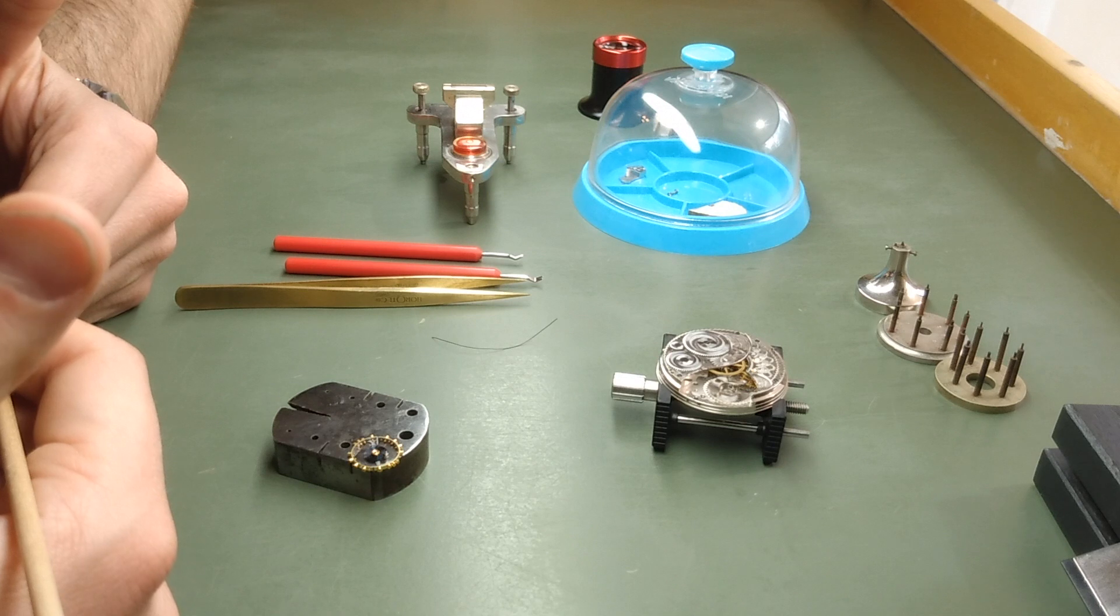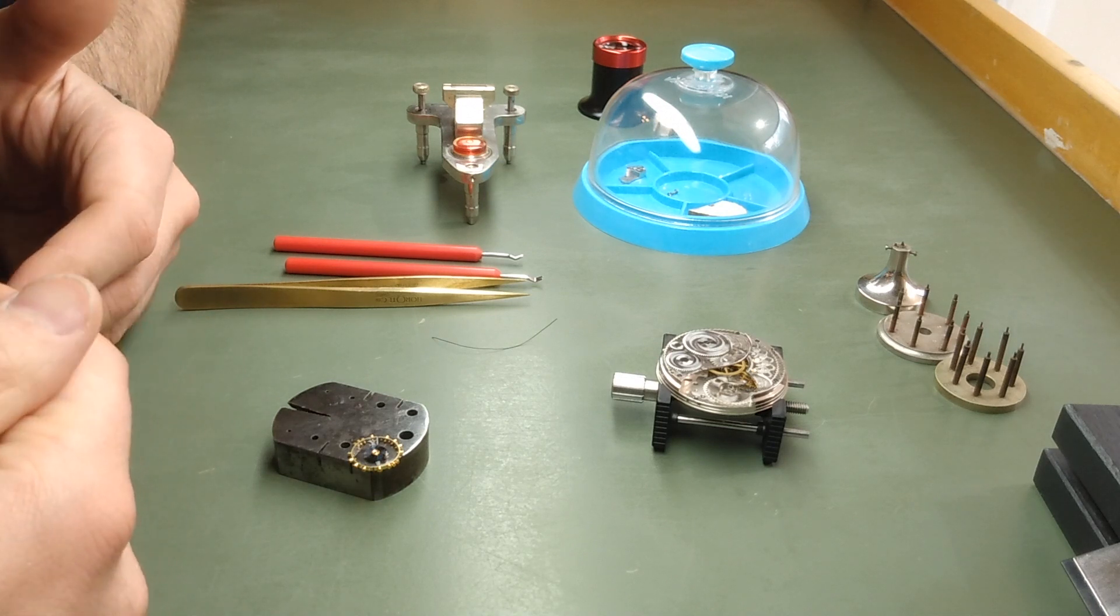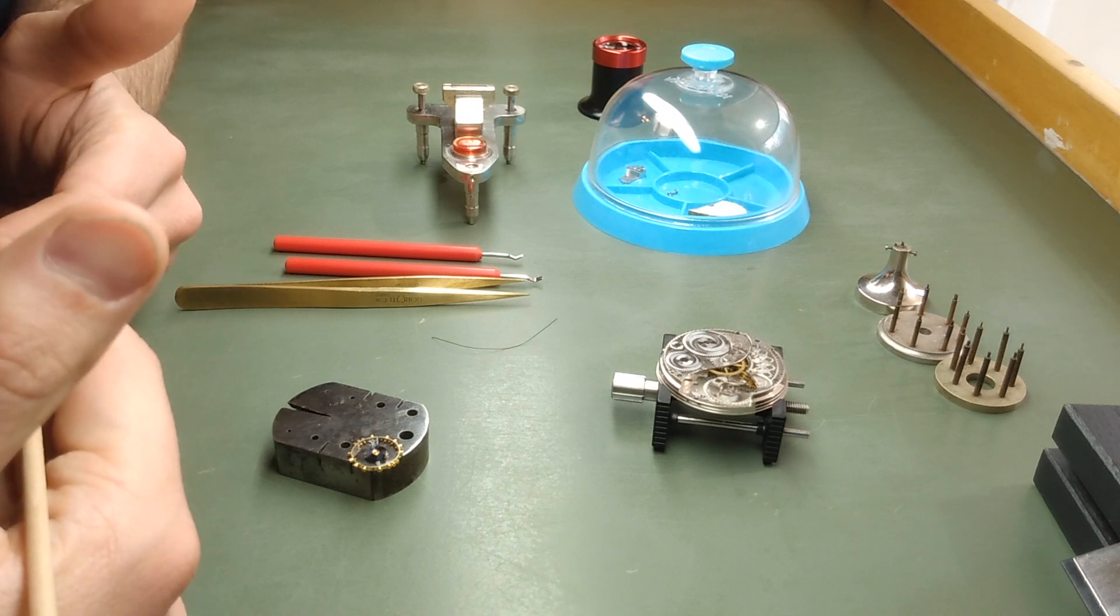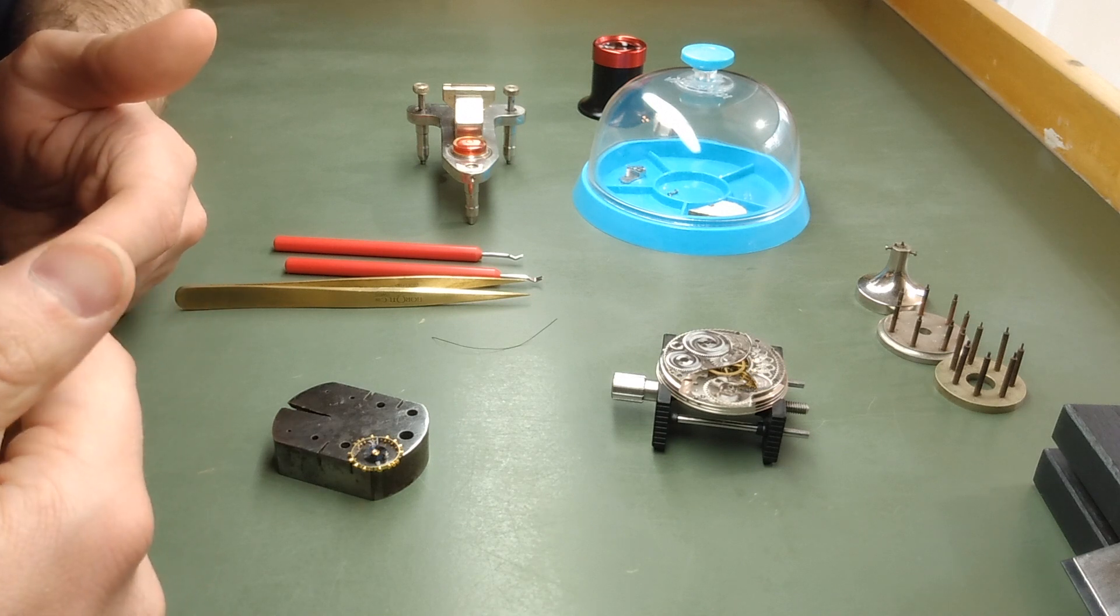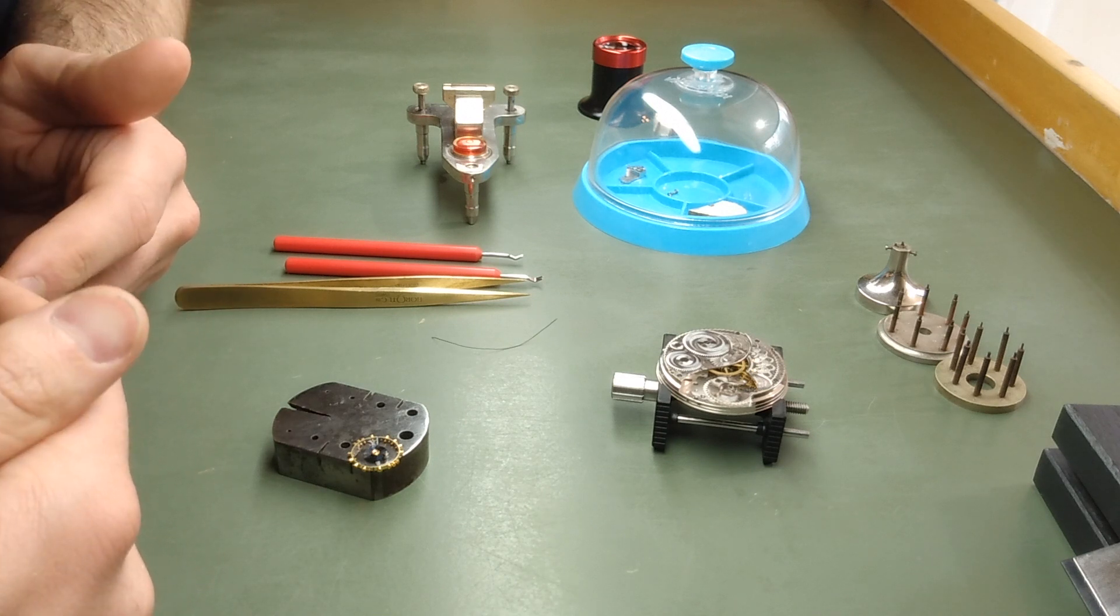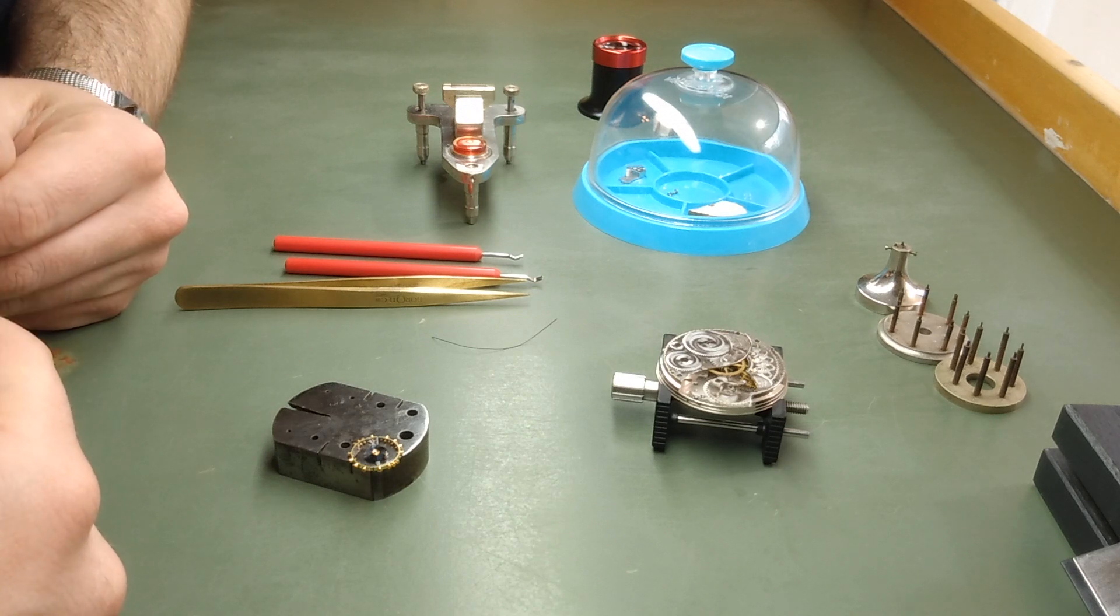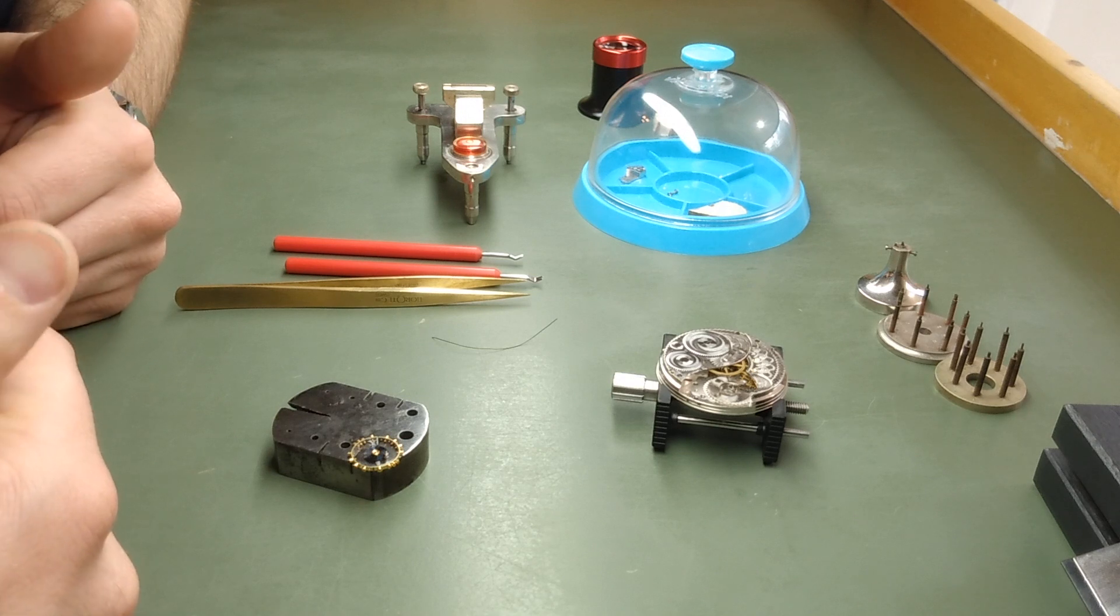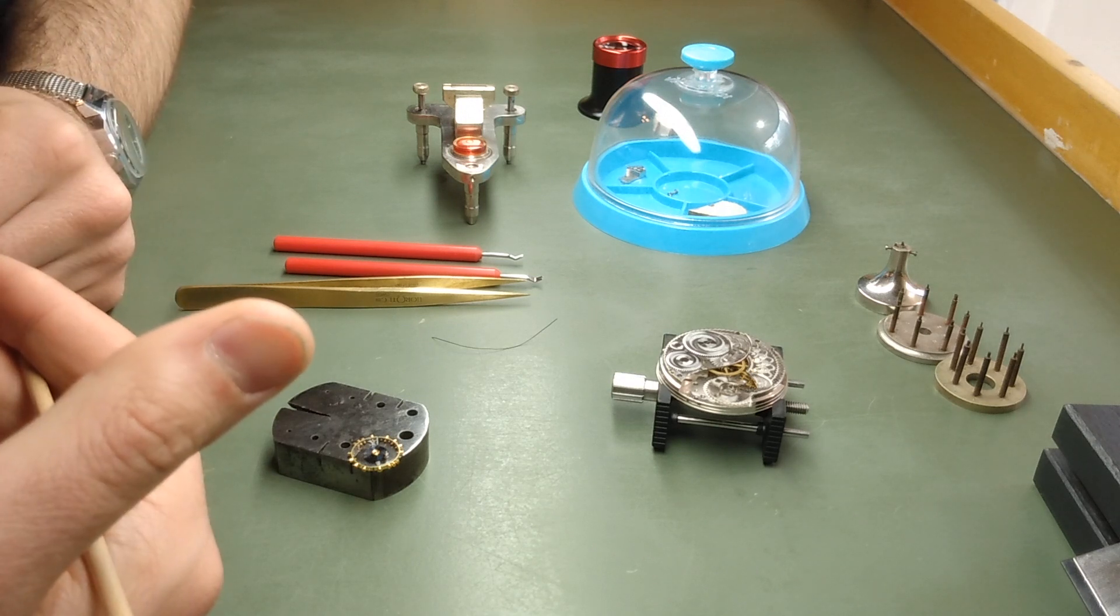And this is occurring despite the fact that the watch makes good amplitude, the regulator pins are appropriately spaced, the hairspring is in nice shape. And so what I think has happened here is that someone has replaced the balance wheel at some point in the past, and combined a balance wheel with a hairspring that is not vibrated to it.